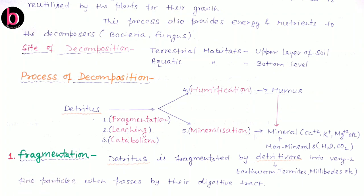The first step is fragmentation — the breaking of detritus present in a particular area, performed by detritivores. Detritivores are organisms that break down dead bodies of plants or animals, converting them into very fine particles as the detritus passes through their digestive tract, thereby increasing the surface area by grinding or digesting these substances. Examples include earthworm, termites, millipede, centipede, dung beetle, etc.